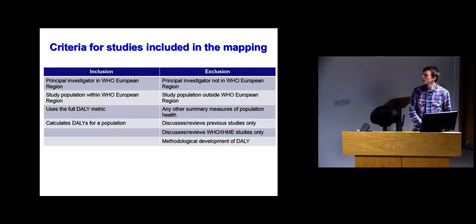Here's my inclusion and exclusion criteria. The principal investigator needed to be from within the European region. The study population was restricted to Europe. They needed to use the DALY metric, Disability Adjusted Life Years, as their way of looking at burden of disease. And they calculated these DALYs - it wasn't a review study or a study just discussing methods. The exclusions are the opposites really.